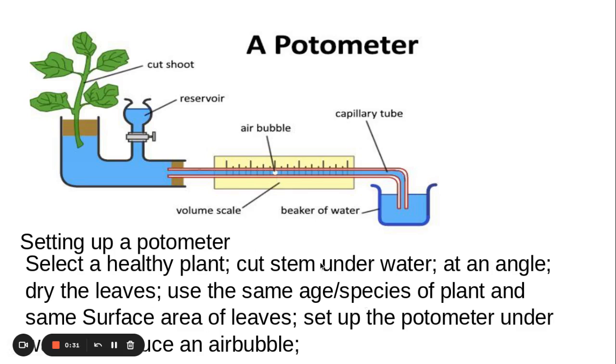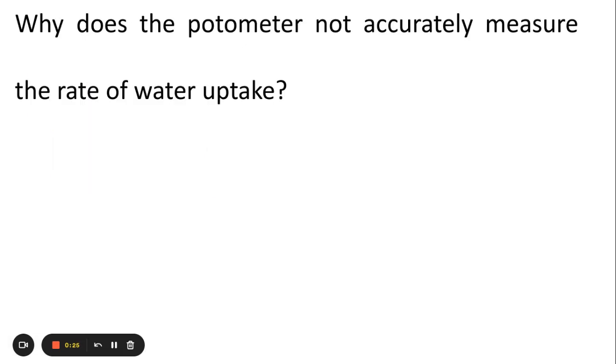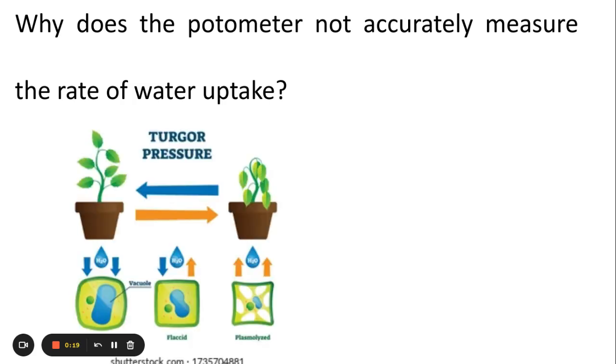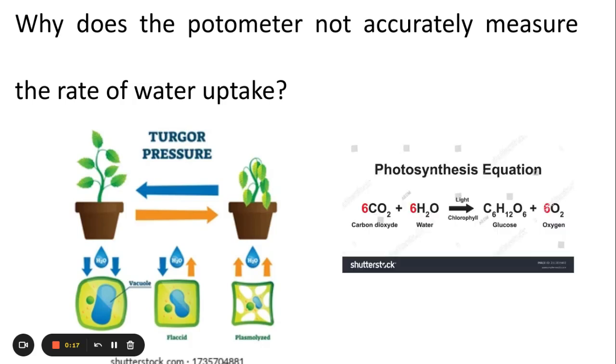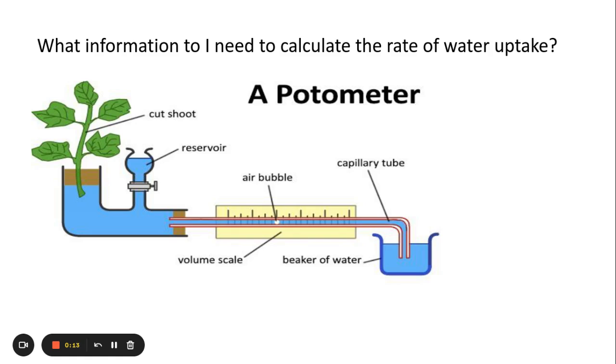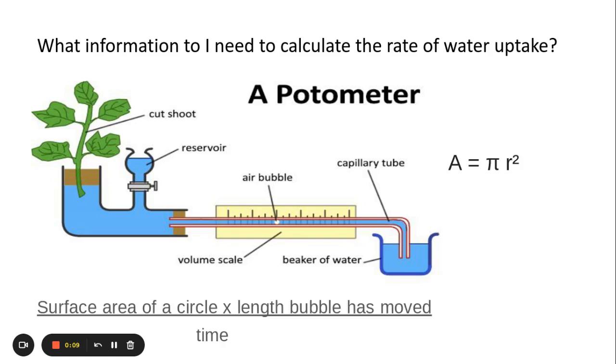These control variables here are very popular, as well as the ones that can impact upon transpiration. A couple of popular questions with the potometer: the reason why a potometer doesn't accurately measure the water uptake is because some of the water can be used in turgor pressure and also some water can be used in photosynthesis. What information do I need to calculate the water uptake? You need to know the diameter or radius, the length of bubbles, and the time. Good luck with your exams, guys.